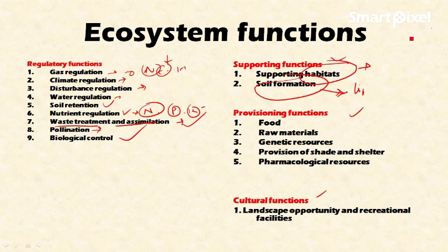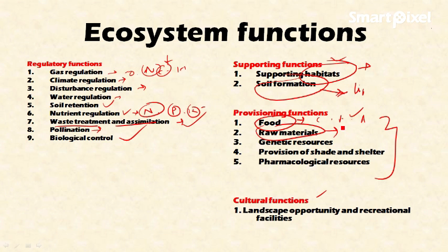Abiotic factors like rocks and minerals, when weathered in association with living organisms, result in the formation of soil over the course of time. The provisioning function means the ecosystem also provides various services, including food in the form of fruits and vegetables and animal food sources.